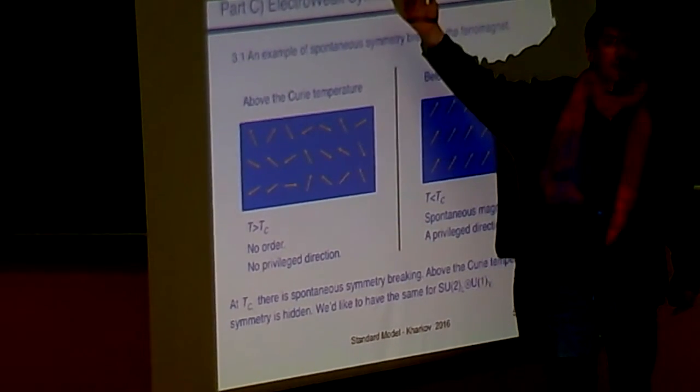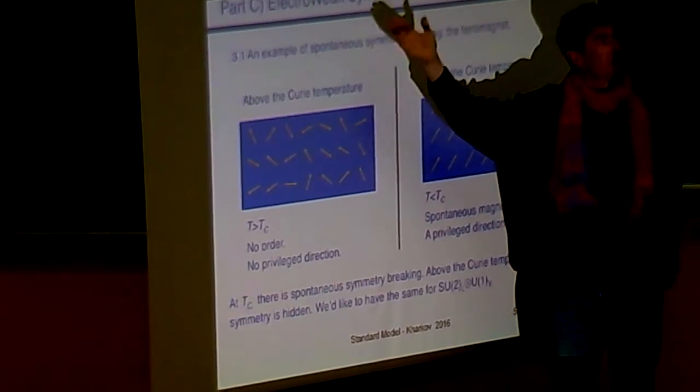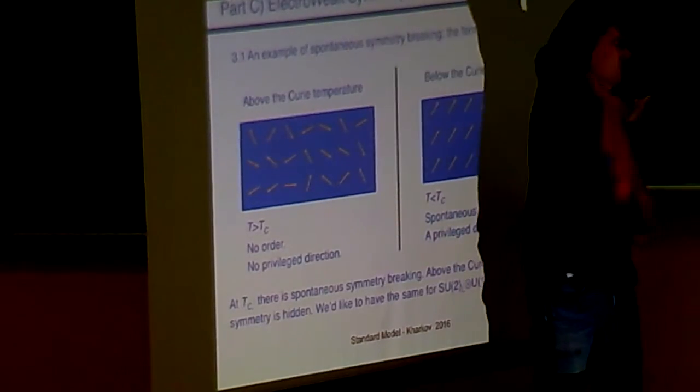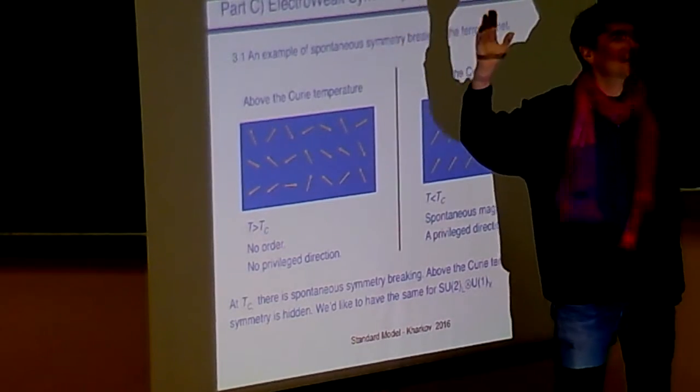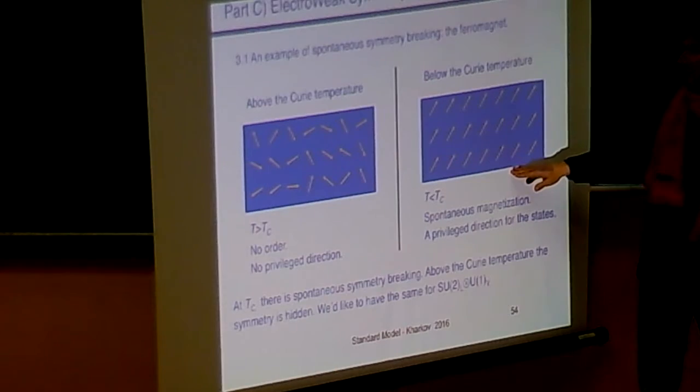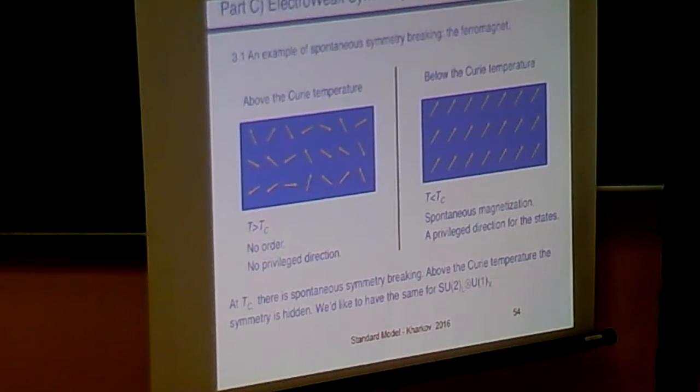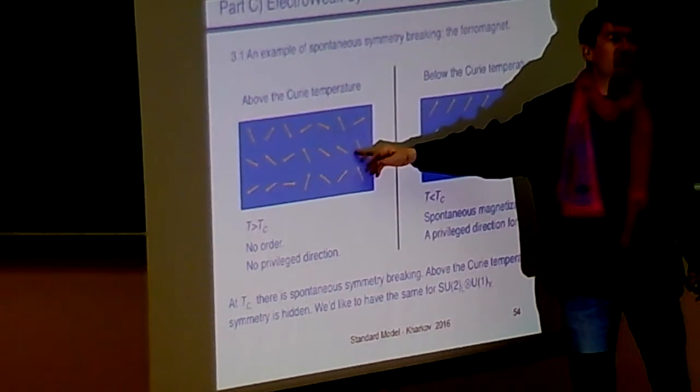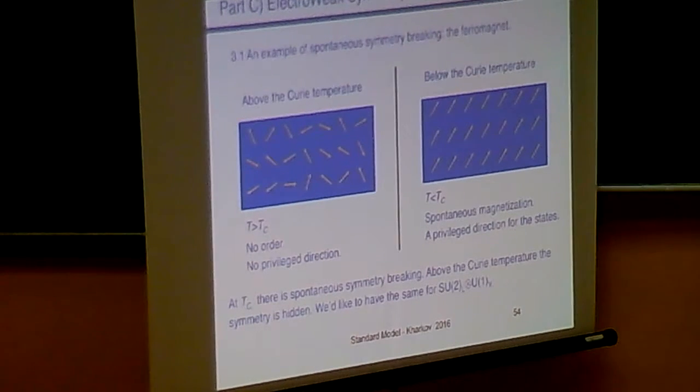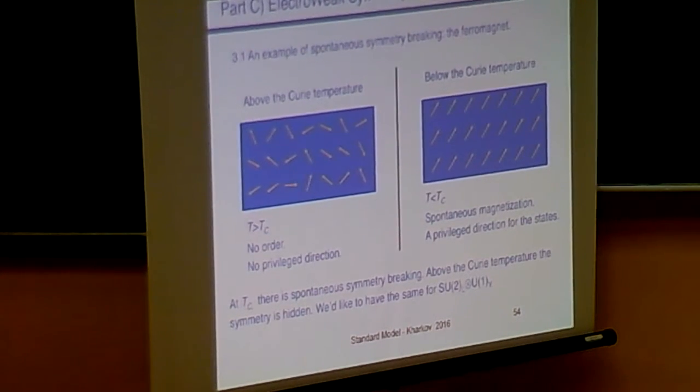You feel that the problem is the mass. We cannot account for the mass of the W and Z. We cannot account for the mass of the fermions. So let's start by what is the spontaneous symmetry breaking. Do you know the ferromagnets? Yes, of course. Above a given temperature, the spins of the ferromagnet are just not ordered. It's like it's possible to move in three dimensions. And below a given temperature, there is a phenomenon which occurs. And all the spins are going the same directions. They are aligned. So you go from an O3 symmetry to an O2 symmetry.